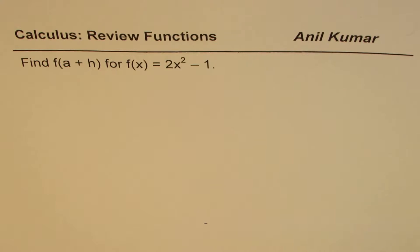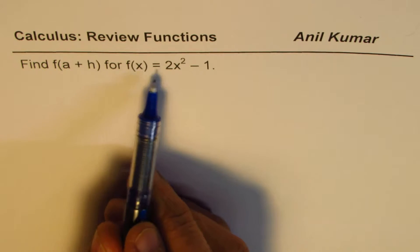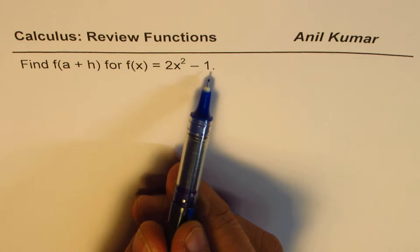In this video, we will understand how to use function notation. The question is, find f(a+h) for f(x) = 2x² - 1.